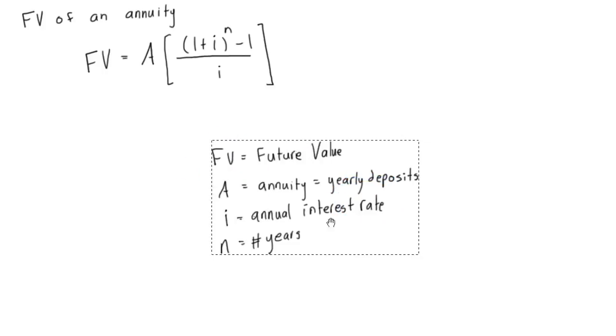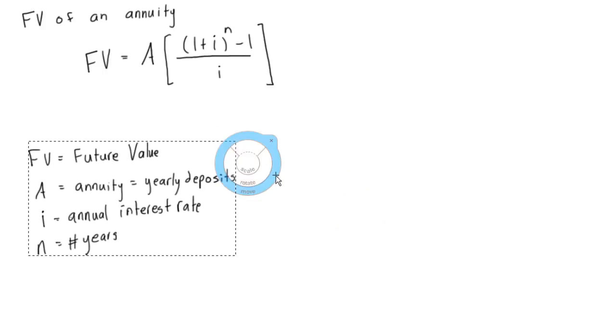I've written down this stuff just so you don't have to watch me write it again. F is the future value, A is the amount of money we're gonna deposit at the end of each year, i is the annual interest rate and n is the number of years.